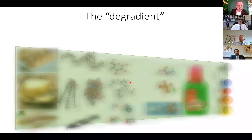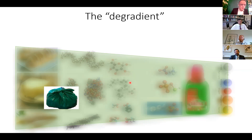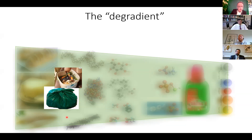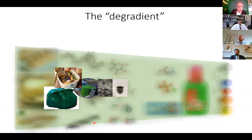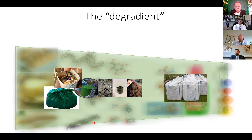I have termed this continuum the 'degradiant.' Your bag of food waste is partly intact tissue but also actively degrading — there's a lot of lactic acid production with lactobacillus bacteria; Bokashi fermentation sits in the area between intact tissue and degraded slurry. Material can go through a biogas plant and turn into digestate, or we can take the solids and make stabilized compost. The mineral fertilizer produced by Yara is at the other end. The trouble is that during this degradation we lose a lot of nitrogen and also some sulfur.